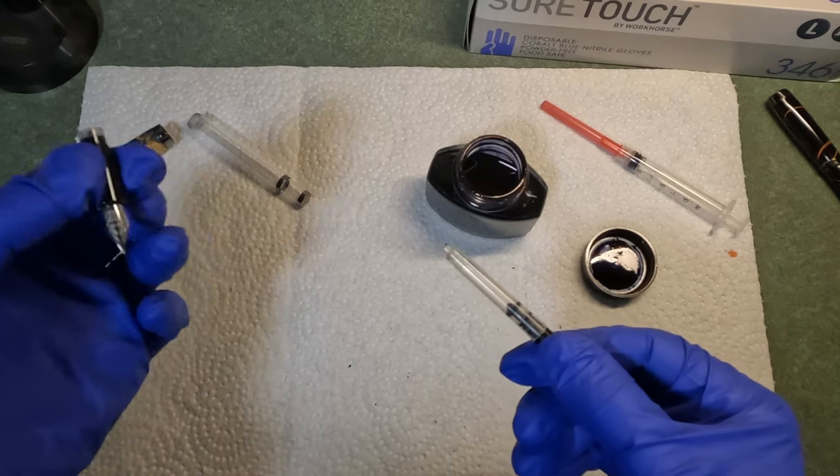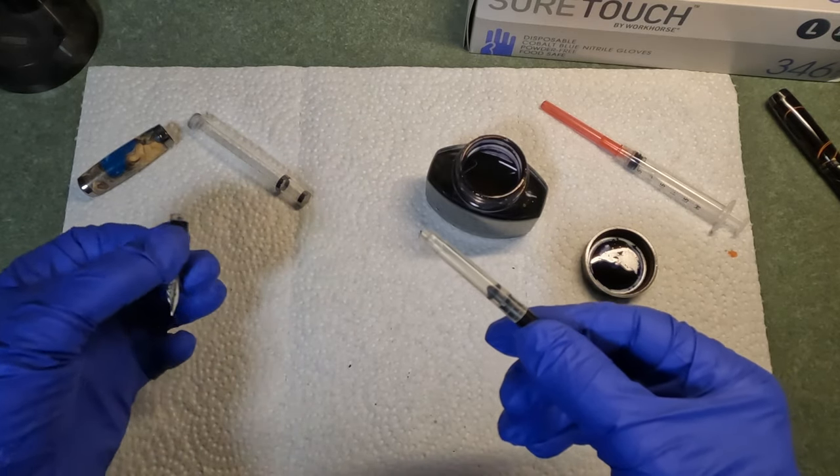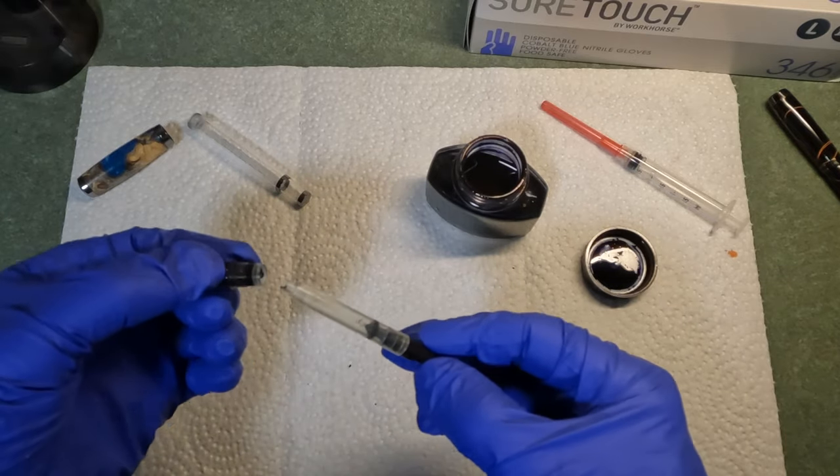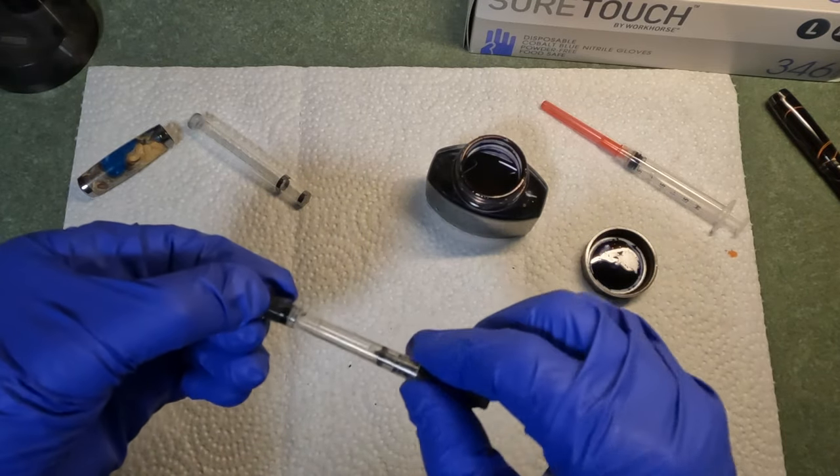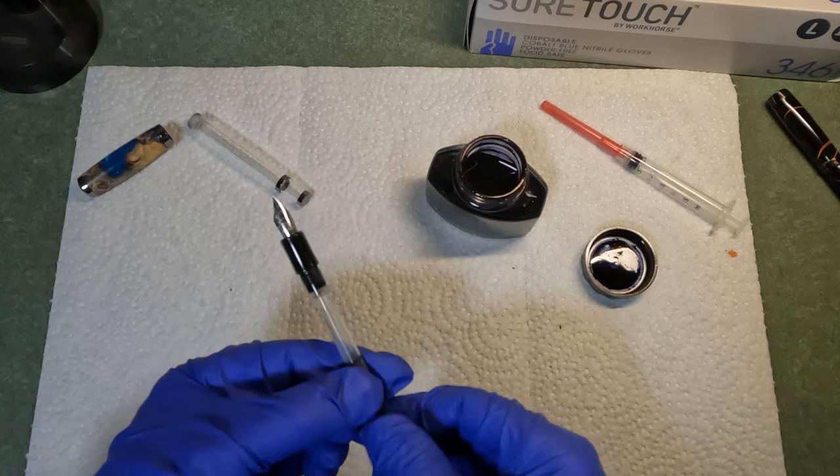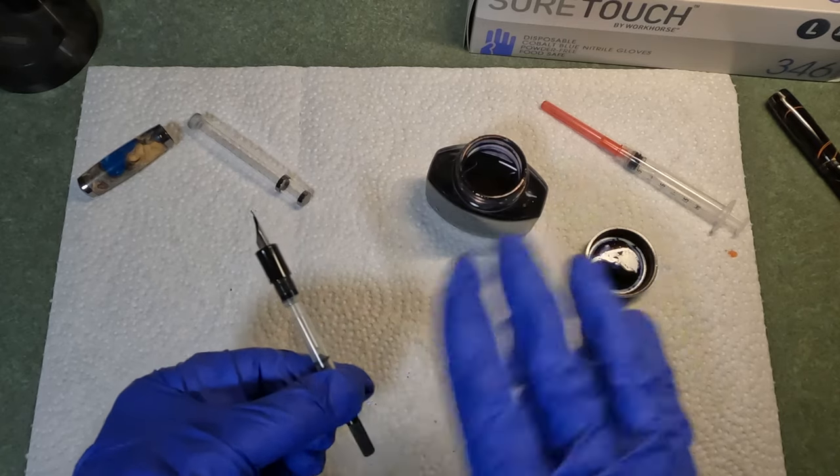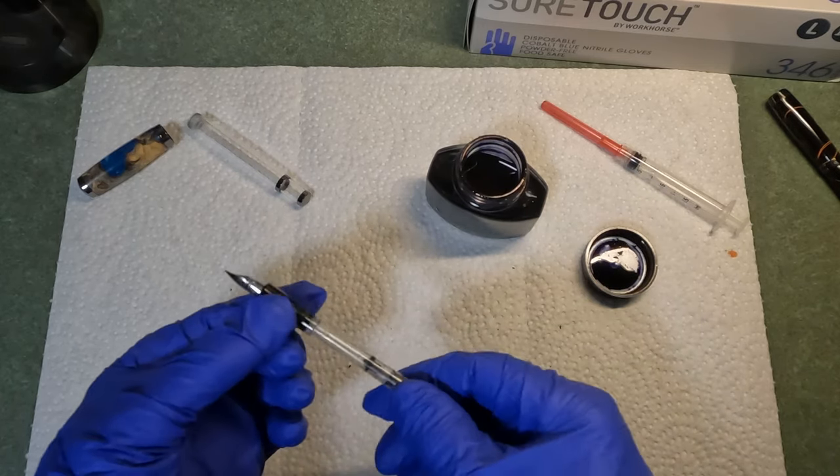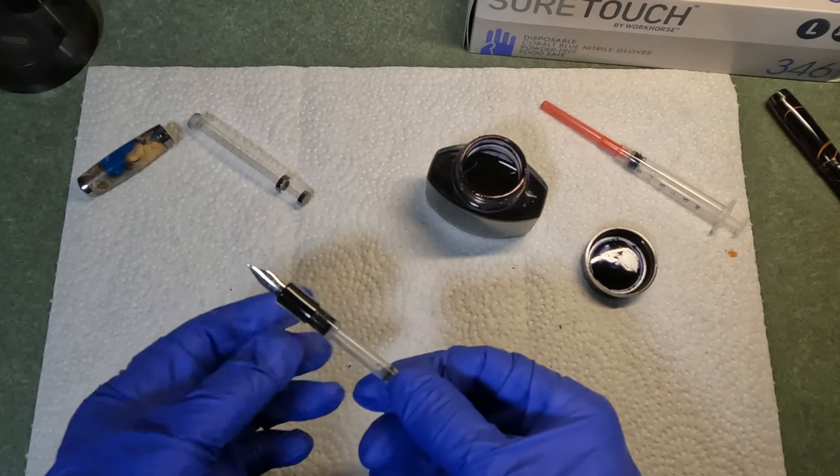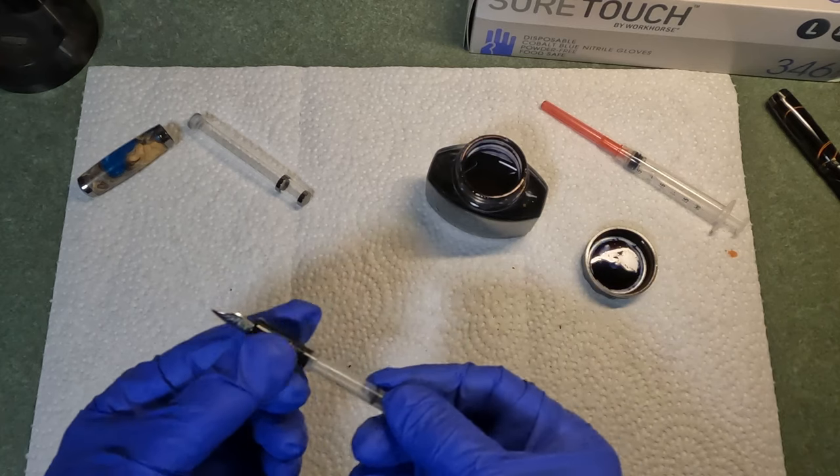That avoids immersing the tip of the pen in ink. So you now got ink in your converter. You can simply plug the converter in and then force a little bit of ink into the feed. We'll talk about that in just a second. So that's a little bit nicer, a little bit cleaner than the nib dip method.